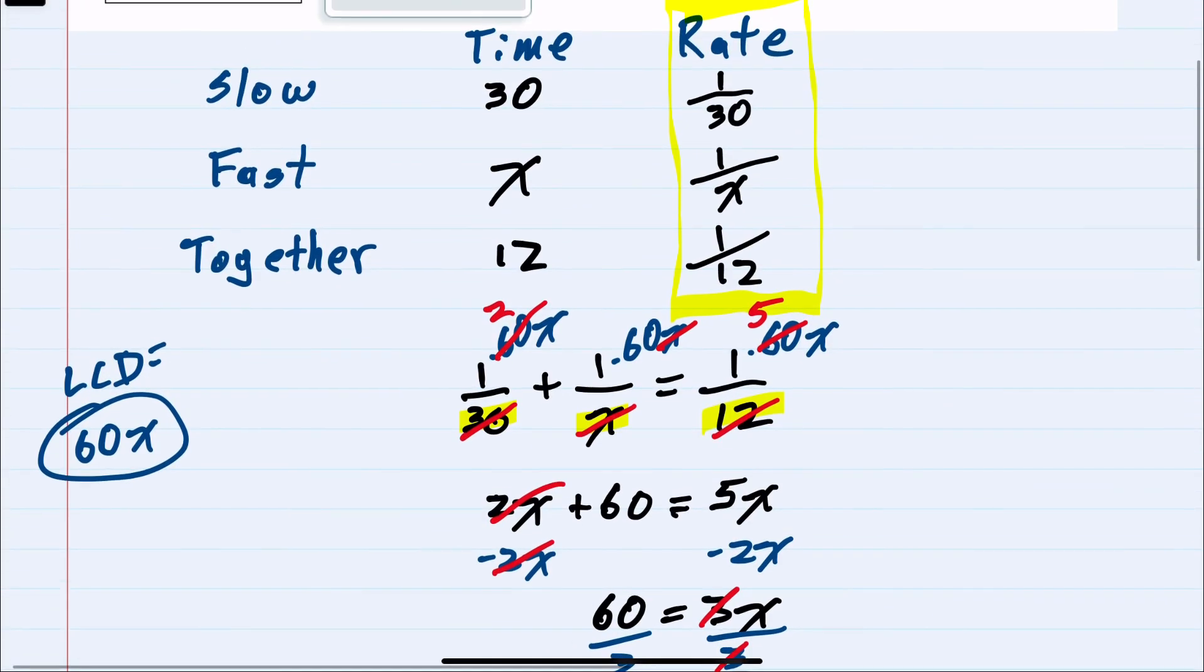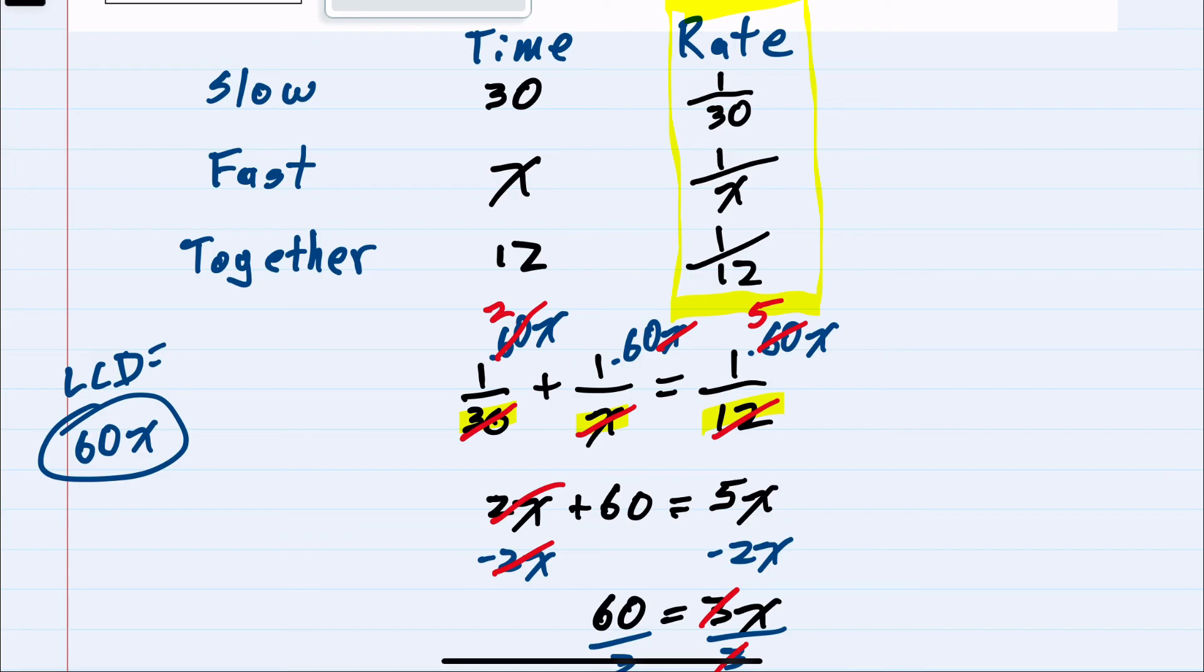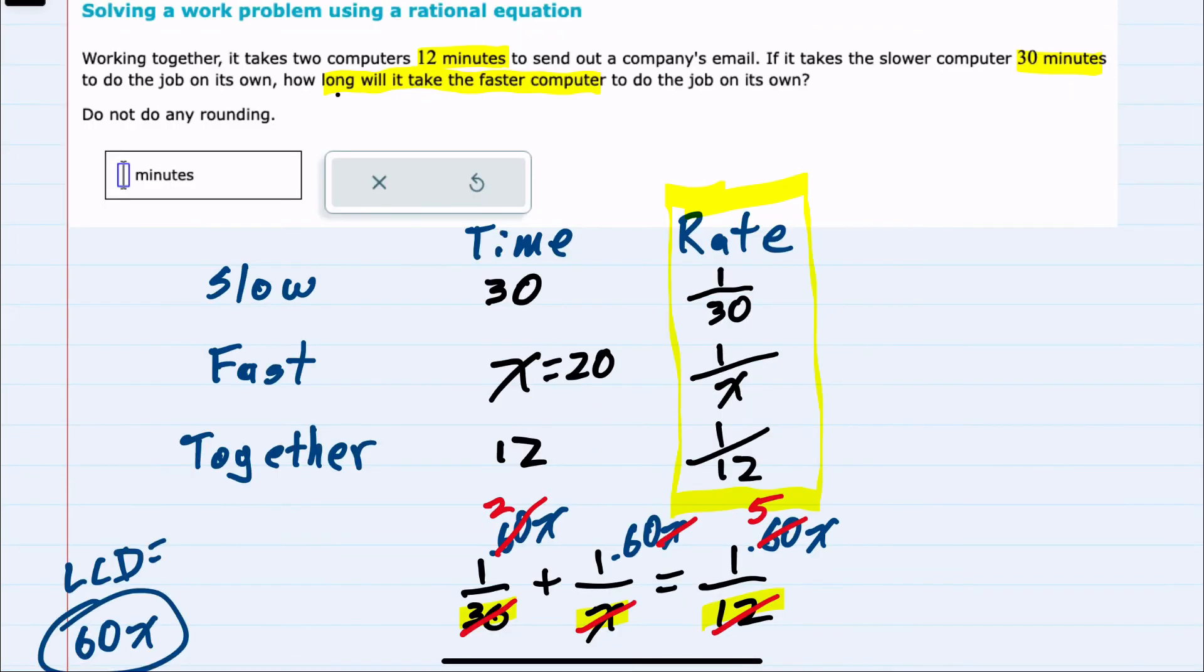Looking back at our chart, x is the time for the fast computer. And we were asked how long the fast computer takes to do the job. Our time is in minutes, so 20 minutes for the fast computer if it were working on its own.